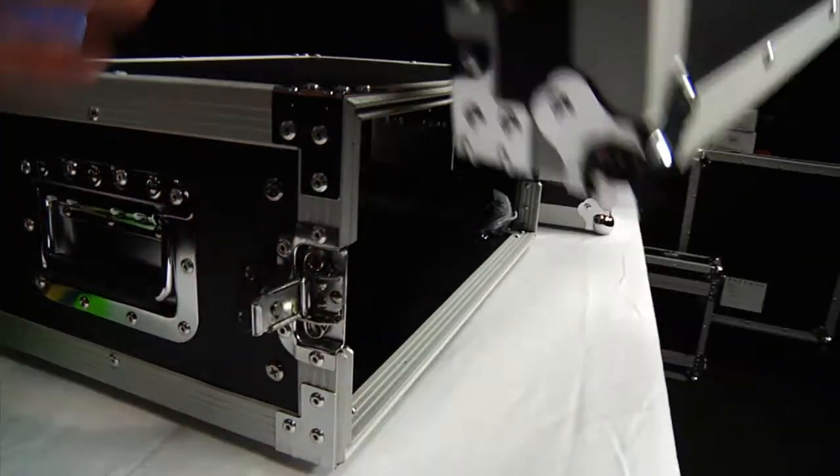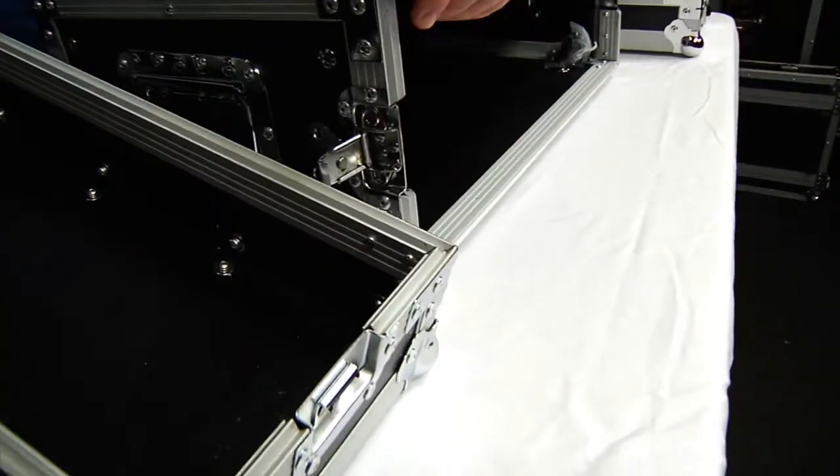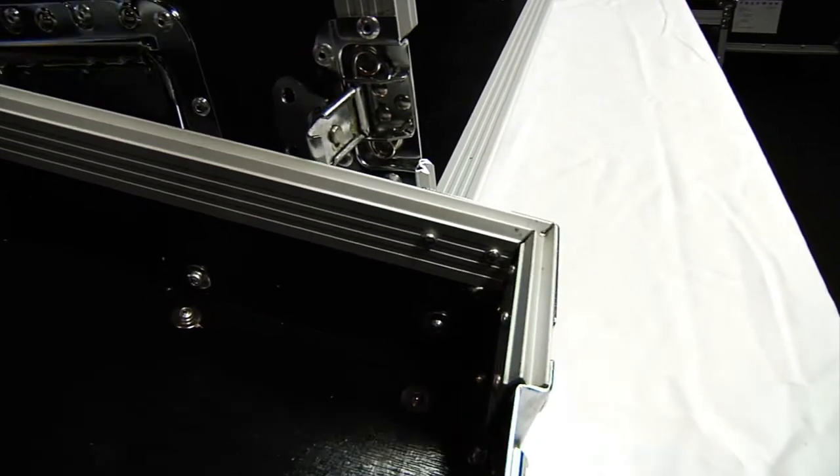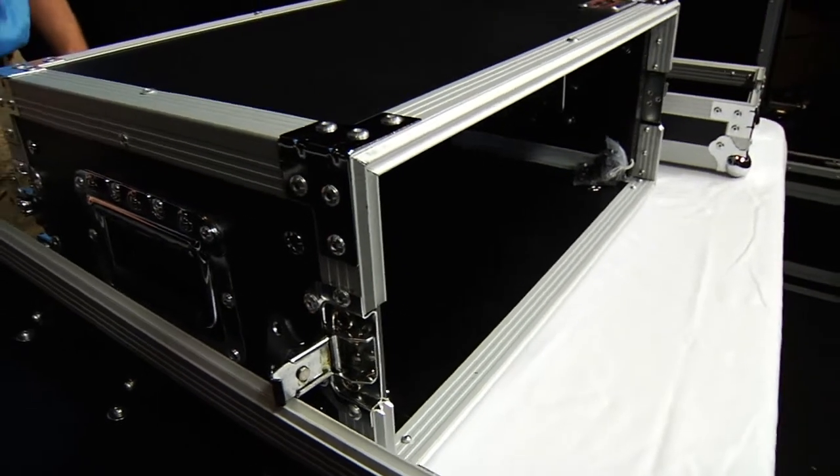It's got this little tongue and groove and then also on this aluminum trim. It's also got a tongue and groove design so it just seals up nicely to keep the dust and dirt and grime out of your equipment while in transit or while in storage.